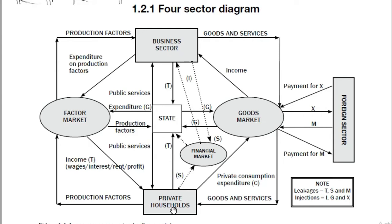Households also receive income from firms in the form of rent, interest, and profit. Households are the major consumers of goods and services — they use their income to buy goods from the goods market. This line shows income being spent at the goods market, and this line shows them receiving goods and services.